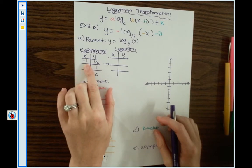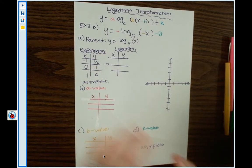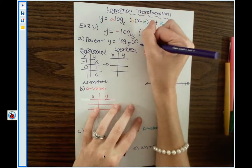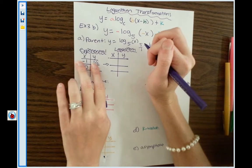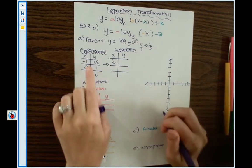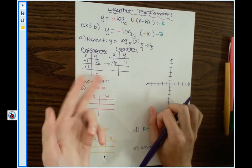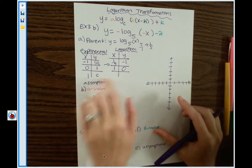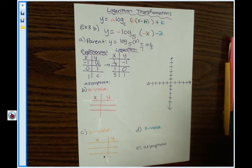For the exponential function, the first point is negative 1, 1 over c — meaning you find the reciprocal of the base. Since the base is 5, the reciprocal is 1 over 5. Because x and y are trading spots, we write 1 fifth first, and negative 1 becomes the y: giving us the point (1/5, -1). Then (1, 0), and finally the base value gives us (5, 1). These are our log points — the exponential values simply inverted or interchanged.